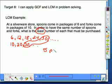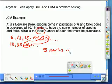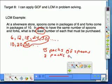If I buy 5 packs of spoons and 3 packs of forks, I will have the same number of spoons and same number of forks. I will have 30 of each.